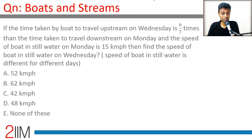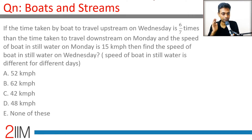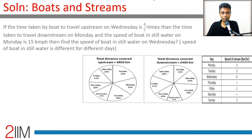Find the still water speed on Wednesday. This question tells us that still water speeds are different on different days, so there are multiple variables. The advantage is we tackle each question one at a time with the information given.